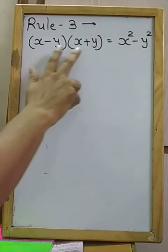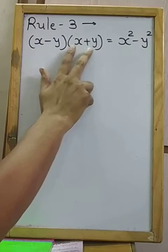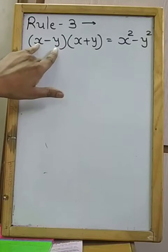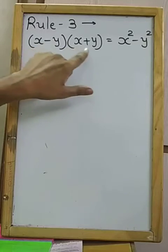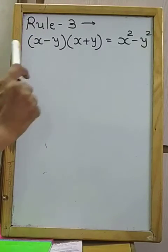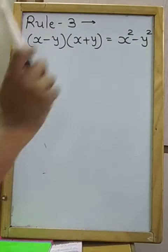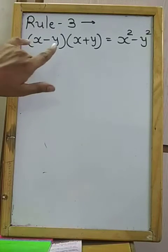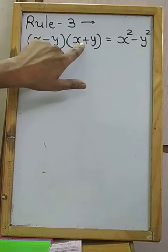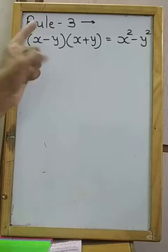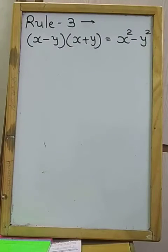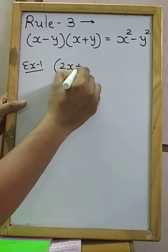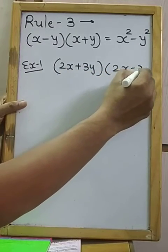Two brackets mean two terms are equal but the sign is different. So the result will be: square of the first term minus square of the last term. Here we have a minus bracket and a plus bracket. For example: (2x + 3y) and (2x − 3y).